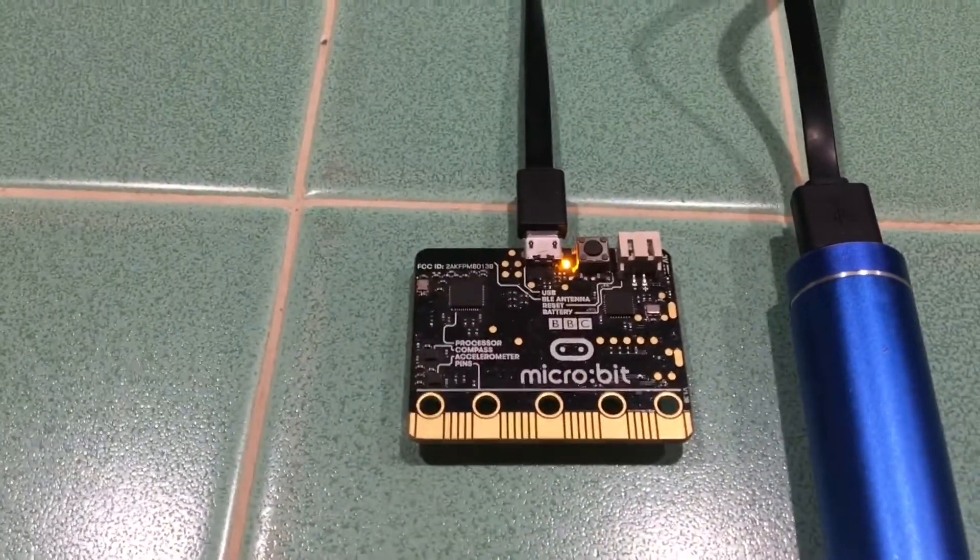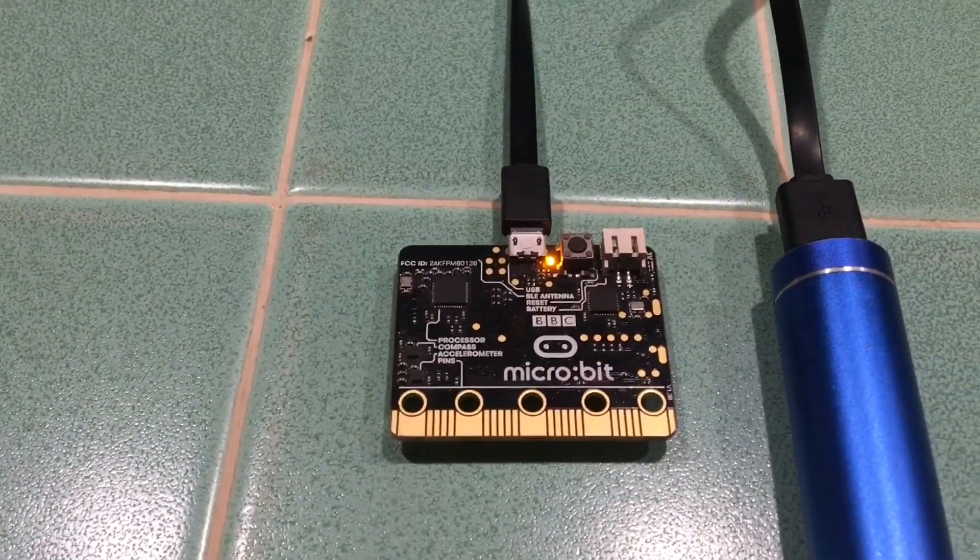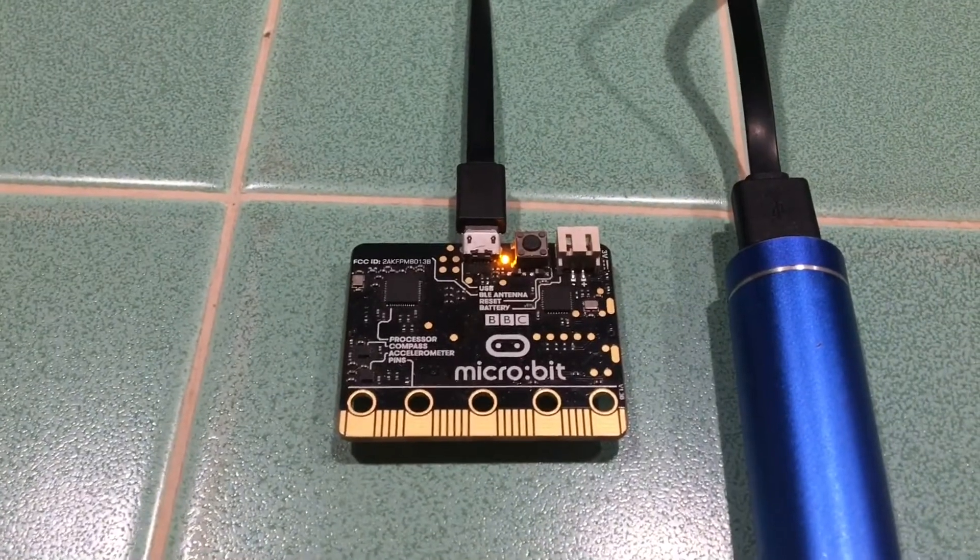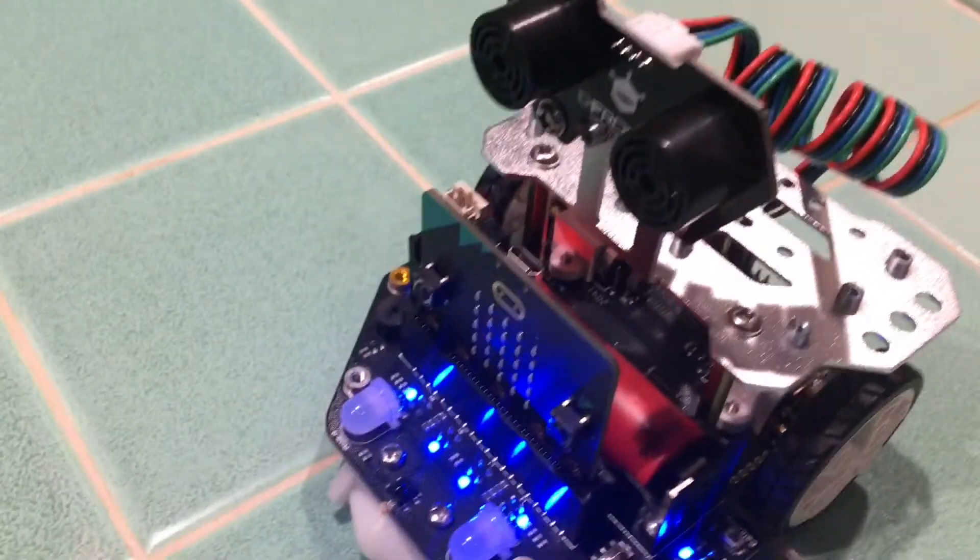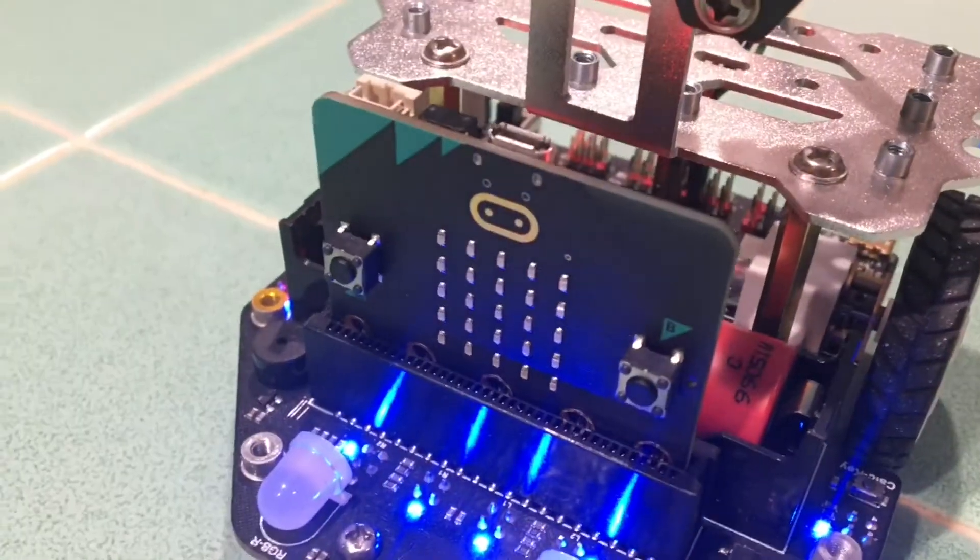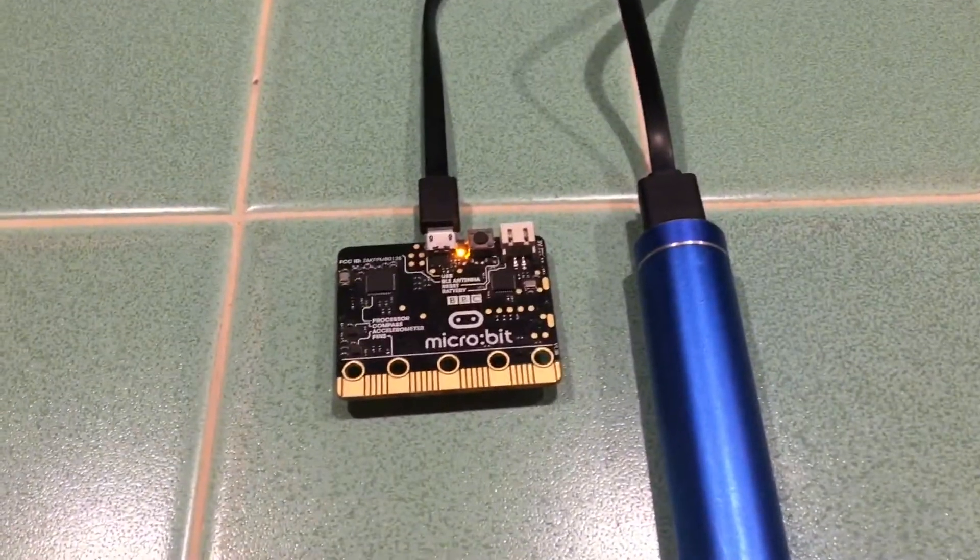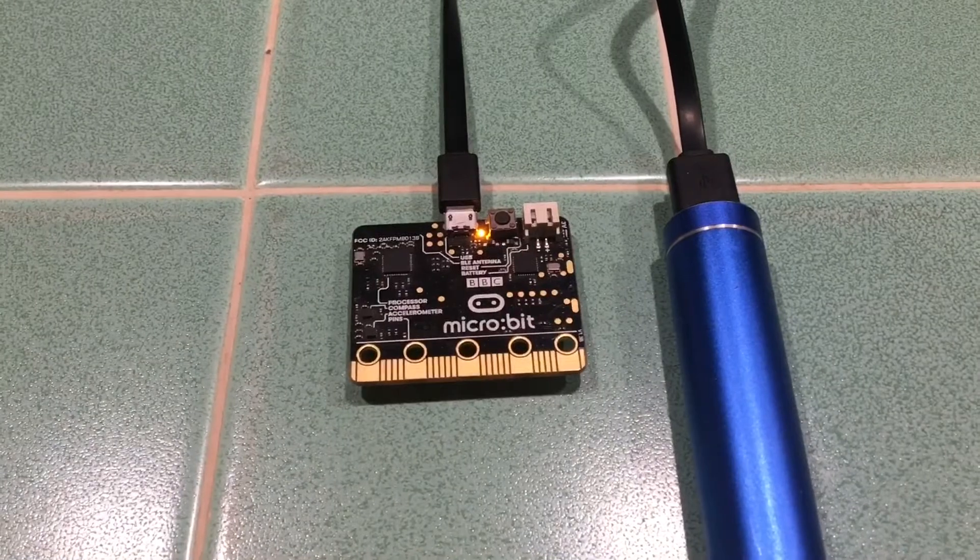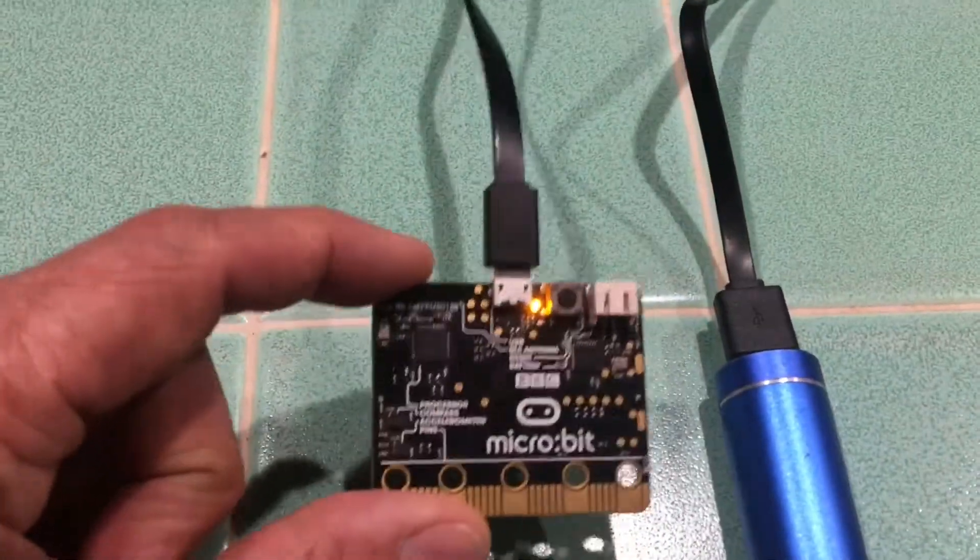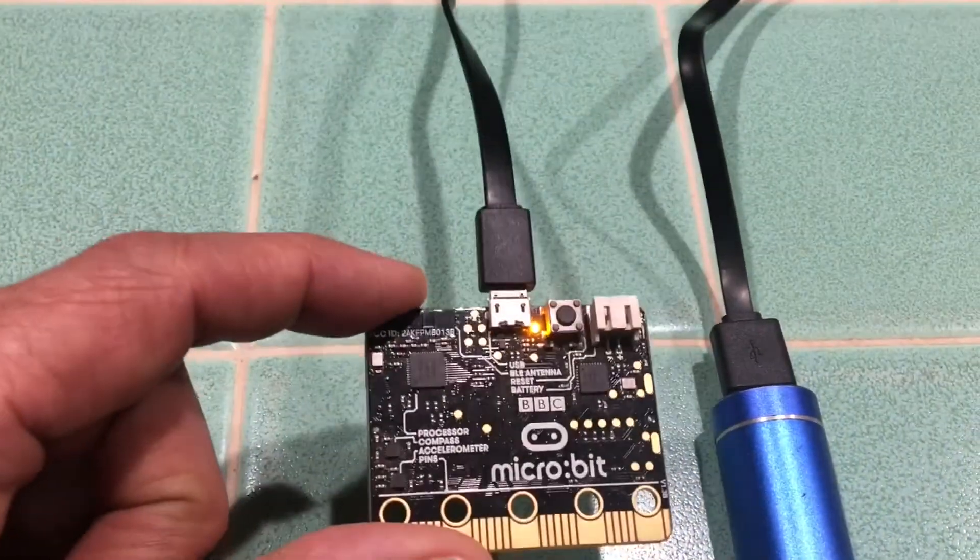Today we're going to show how to use the microbit controller to control a robot which also has another microbit controller using the Bluetooth radio and the accelerometer inside the microbit board.